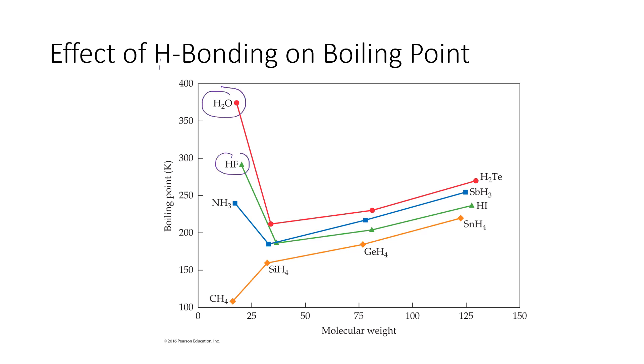These three molecules that fall way outside of the trends for their groups all are molecules that are capable of doing hydrogen bonding. And hydrogen bonding is the reason that the boiling points in these three molecules are so much higher than would be predicted for their groups, because the hydrogen bonding makes the molecules in these samples attract each other so much more strongly that you have to go to much higher temperatures to separate them out of the liquid phase and convert them into a gas.